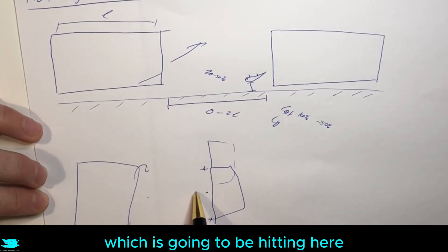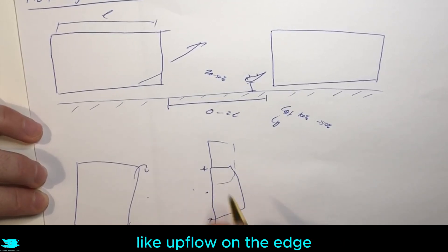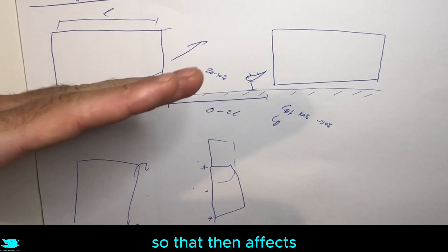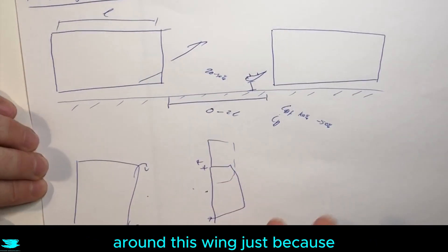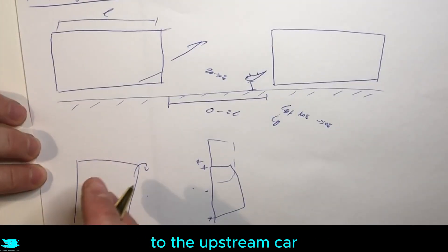Now if you transpose this wing over here, all of a sudden now this vortex which is going to be hitting here, you're getting upflow kicking here like an upflow on the edge now on the wing tip and down on the middle of the wing. So that then affects what the effective angle of attack is now around this wing, just because you've now changed how this wing is positioned compared to the upstream car.